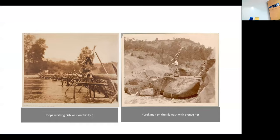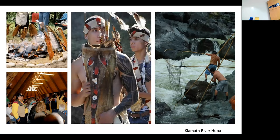In terms of salmon culture and art, this goes back at least 10,000 years. On the left is a Hoop man working a fish weir on the Trinity River; on the right, a Yurok working with a plunge net on the Klamath. These groups had elaborate technologies that supported their salmon-based culture. These traditions are still alive today — the Hoopa have been fighting to save the Klamath run for decades. Potlatch events, celebrating salmon return, and traditional harvesting on the river continue in the same ways they've been practiced for a long time.